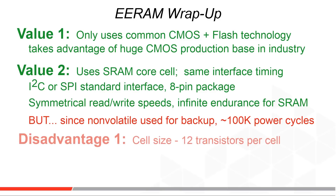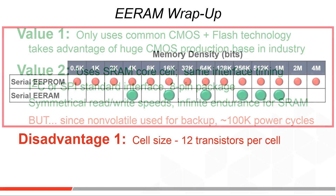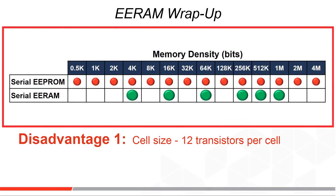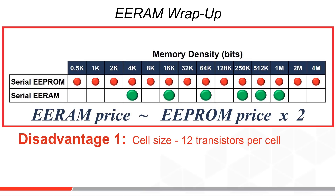Now the disadvantages. First is cell size — 12 transistors per cell — so commercially EERAM is offered at only small densities and only in a serial format. This chart shows the density range of Serial EERAM versus that of Serial EEPROM. The price delta for EERAM over Serial EEPROM is about 2x across the 4K-bit to 1-megabit range. So if you pay $2 for an EEPROM at 10KU volume, then think $4 for the same size EERAM.